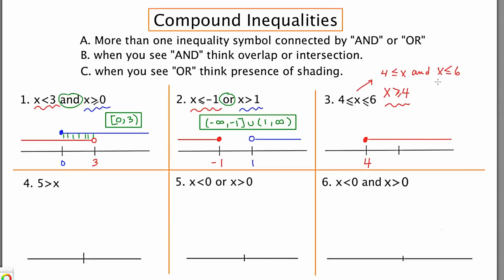The second inequality is X is less than or equal to 6. I'm going to put 6 on the number line, make this one inclusive as well, and shade to the left because it's less than. Because of the connector AND, I'm going to look for overlapping regions. Is there any place where the blue and the red overlap? And the answer is yes, starting at 4 and ending at 6. We can describe this with interval notation as bracket 4 comma 6 bracket.